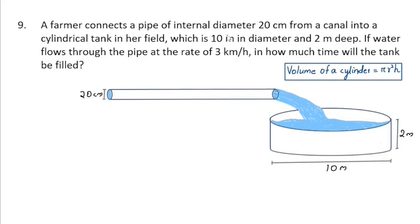A farmer connects a pipe of internal diameter 20 cm from a canal into a cylindrical tank in her field, which is 10 m in diameter and 2 m deep. If water flows through the pipe at the rate of 3 km per hour, in how much time will the tank be filled?